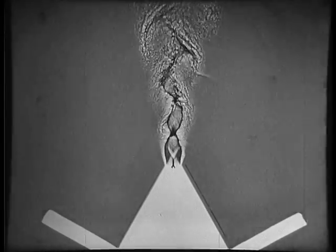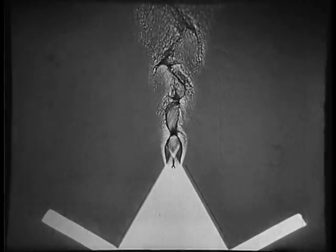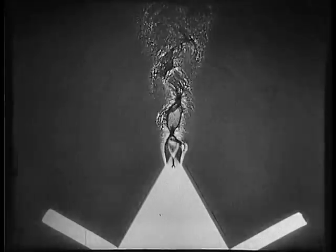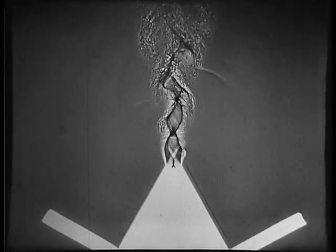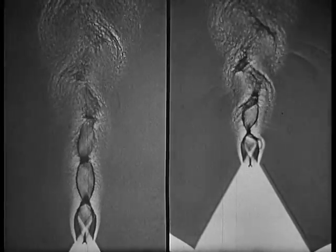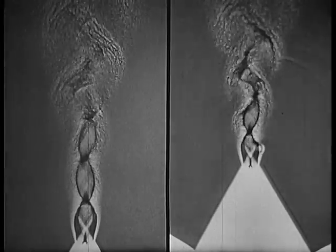And thirdly, vortices spring up on each side of the jet close to the nozzle and are carried downstream in the boundary layer. We now show the two films again. One without reflectors, the other with reflectors.